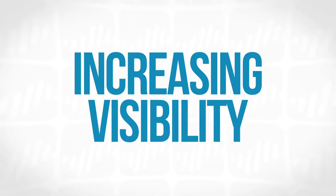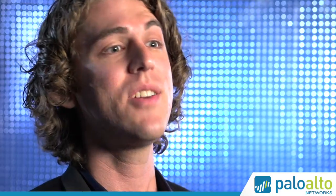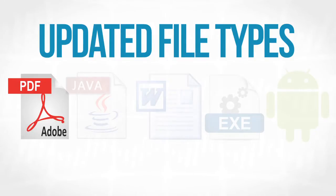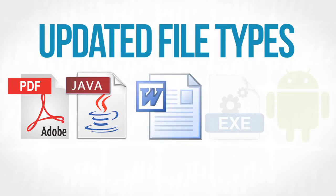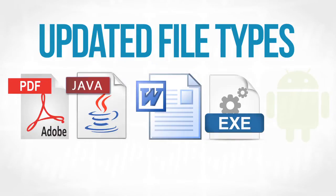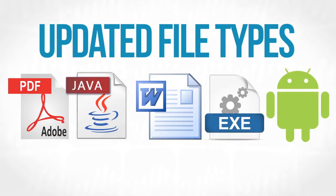The new things are really all about visibility. We're adding new file types to Wildfire, like Adobe PDFs for those spear phishing attacks that are coming in over webmail and encryption. Java, which can be used for drive-by downloads where you're visiting a common website that's silently infecting you. Office documents that are present in almost every organization, as well as the executables that we've always done, plus Android APKs for mobile malware.